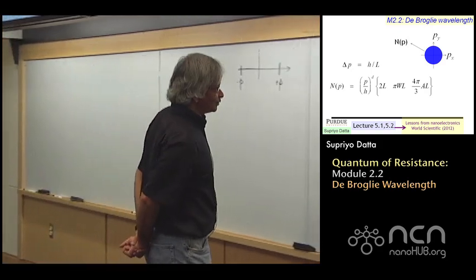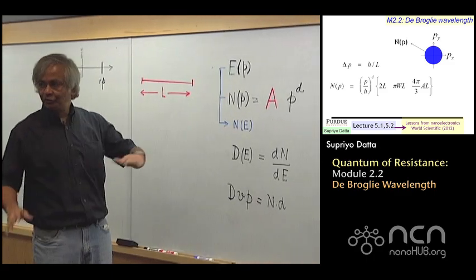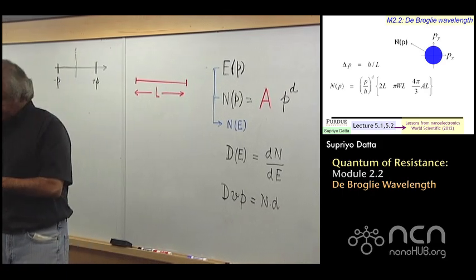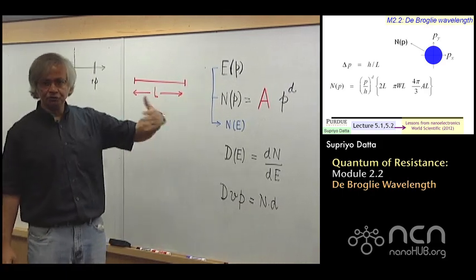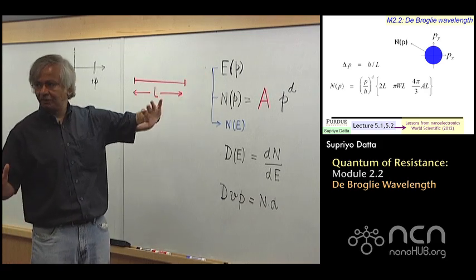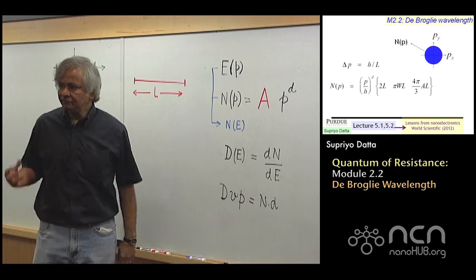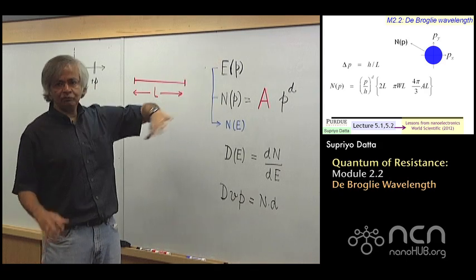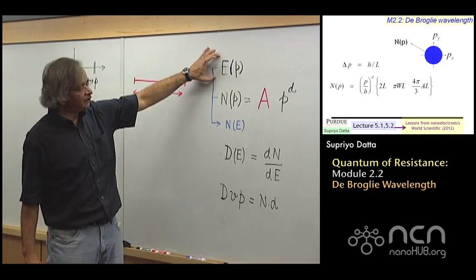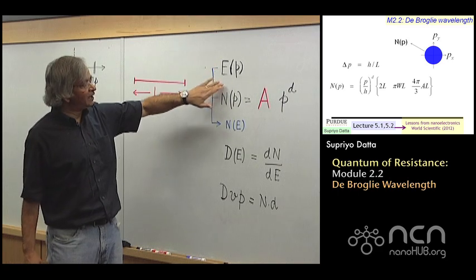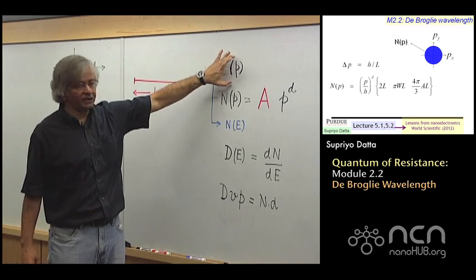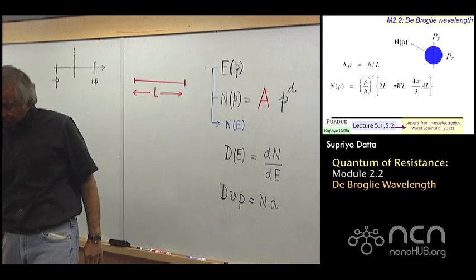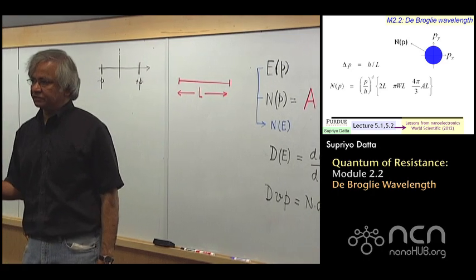Just to remind you what we did in module 2.1, the overall objective of this week is to introduce a model for calculating this density of states. In module 2.1, I introduced this simple model that we'll be using which starts from this energy-momentum relation. Given a solid, we know from experiments and theory that electrons in the energy range of interest behave as if they have a particular energy-momentum relationship. So let's say that's given. What we are talking about is from that energy-momentum relation, how do I obtain a density of states?